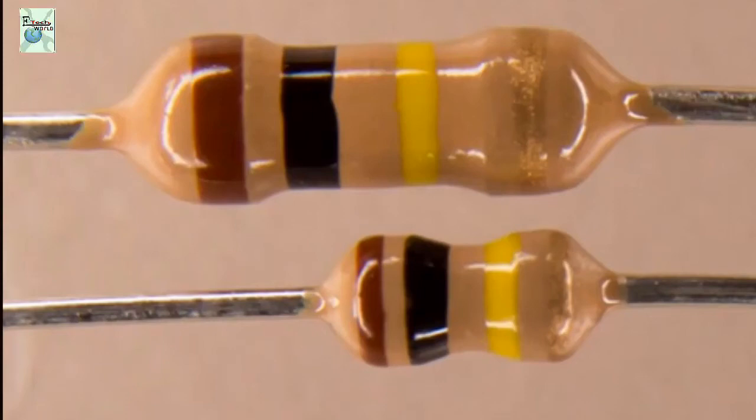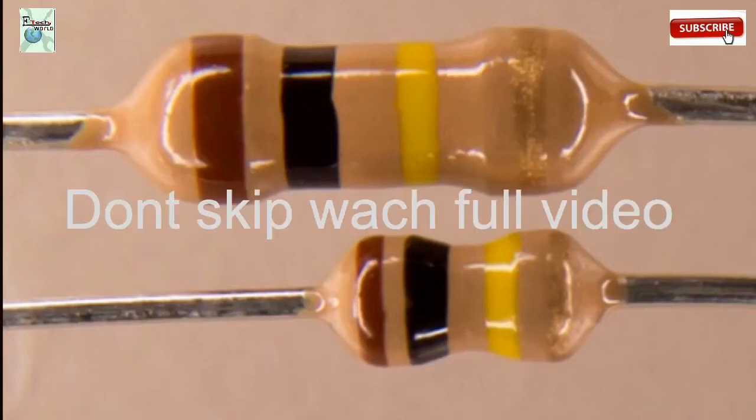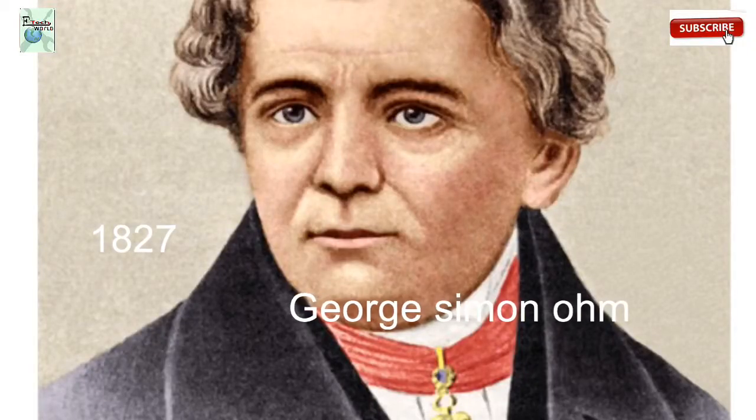Hi guys, today I am going to explain what is a resistor. A resistor reduces the current flow, adjusts signal levels, divides voltages, biases active elements like transistors, and terminates transmission lines. It was invented by